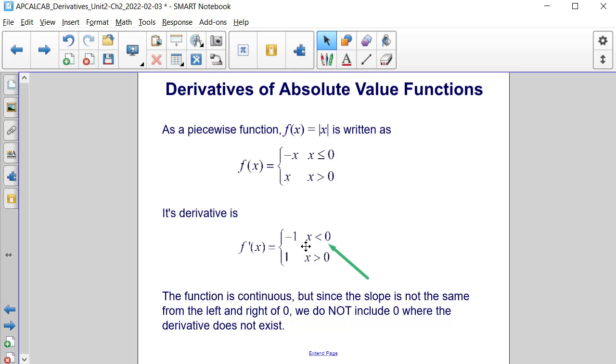will be negative 1 for x values less than 0 and positive 1 for x values greater than 0. The function is continuous, but since the slope is not the same from the left and right at 0, we do not include the equal to sign that appears in the regular function in its derivative, where the derivative does not exist.